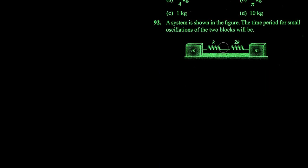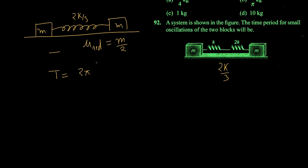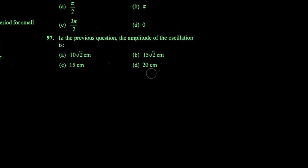This system has two springs in series and two masses. For springs in series, k_net = 2k/3. Treating it as a single spring with one effective mass, the reduced mass formula is m1·m2/(m1+m2) = m/2. Time period T = 2π√(reduced mass / k_net) = 2π√((m/2)/(2k/3)). Simplifying, 3m comes to the numerator and 4k to the denominator, giving T = 2π√(3m/4k). Your answer is option C.